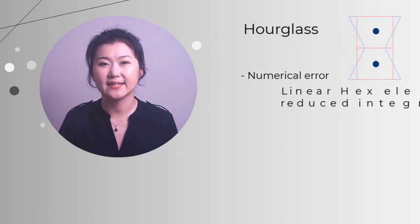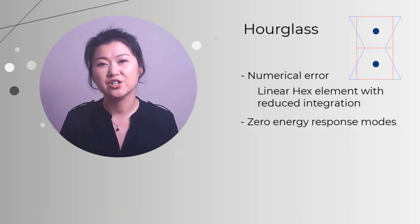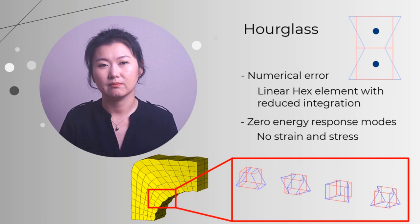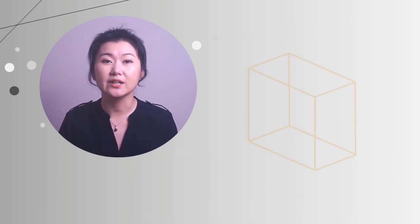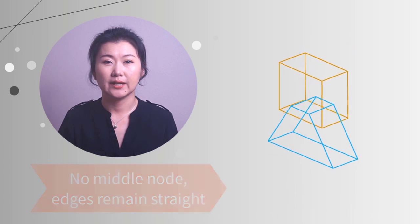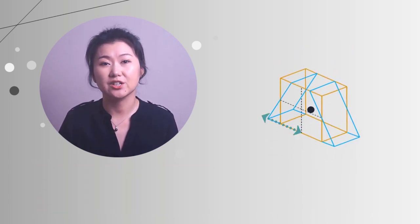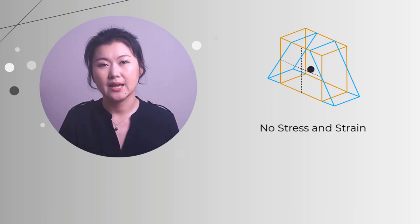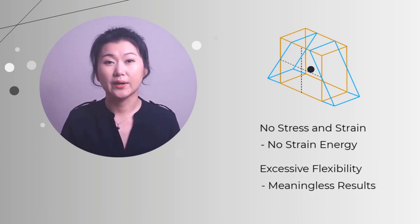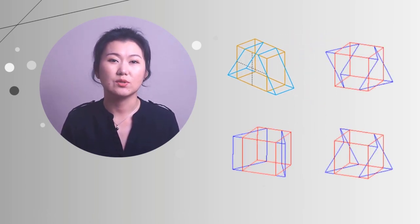So what is hourglass? It's a numerical error associated with linear hex element with reduced integration. It leads to zero energy response modes that produce no strain and stress. In the deformation result, it creates a collection of hourglass shaped elements. Let's consider the hourglass problem on the example of a rectangular hex element subjected to a loading that will have a tendency to deform the element into a trapezoidal shape. Since there's no middle node, the edges have to remain straight here. And if there's just one integration point in the middle of the element, this point cannot detect the change of width and height from this deformed shape. As a result, at this integration point, no stress and strain can be detected, and no strain energy is generated. The element is with excessive flexibility and basically leads to meaningless results.